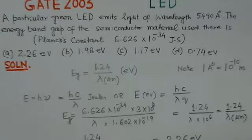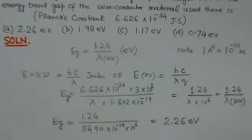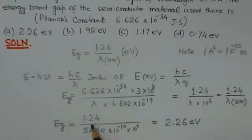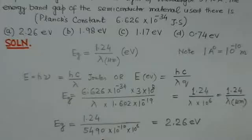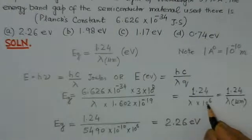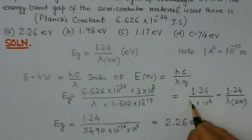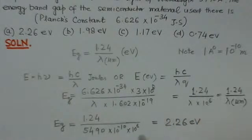Here, we can substitute the relation, that EG is 1.24 over 5490 angstrom, which is 10 to the minus 10, and this is 10 to the 6 here. Lambda we have directly substituted as per this relation, 10 to the 6, so it will be in micrometers.